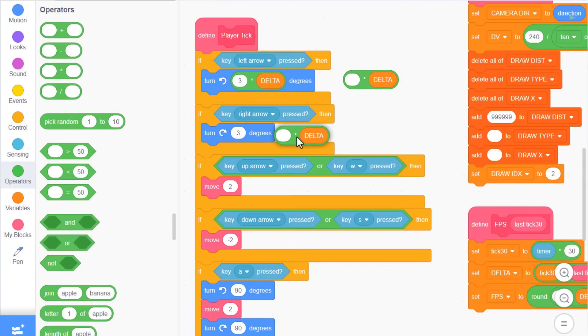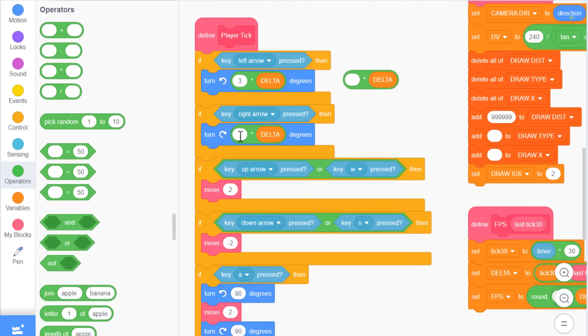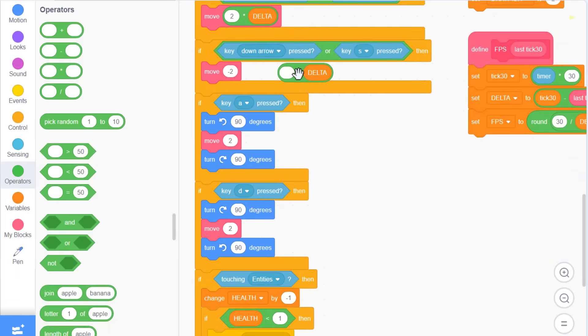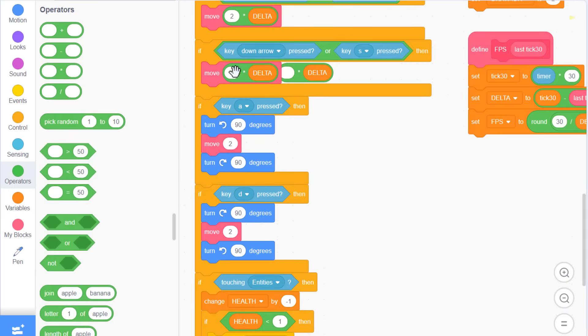Turn left by 3 multiplied by delta. Turn right by 3 multiplied by delta. Move forward by 2 multiplied by delta. Ok, this one's negative. Move by negative 2 multiplied by delta.